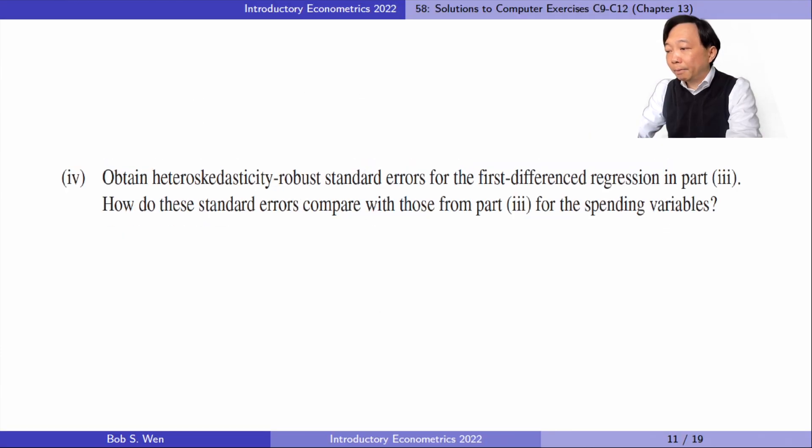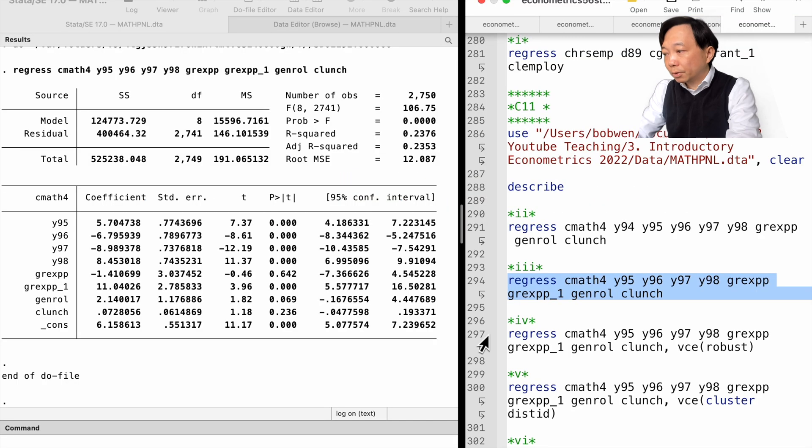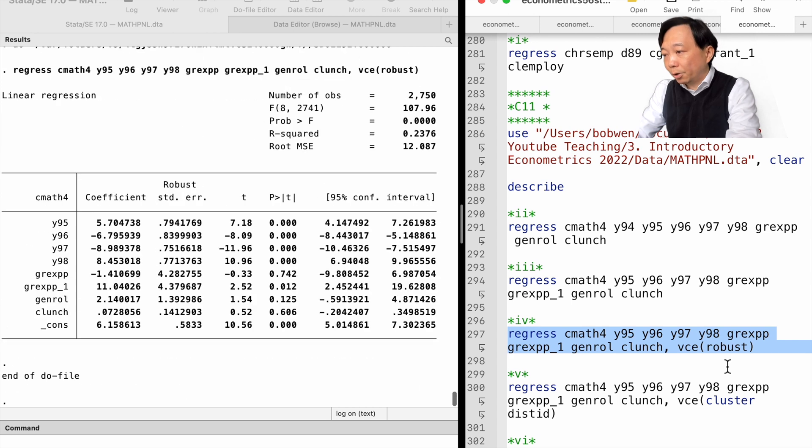In part 4, we obtain heteroscedasticity robust standard errors for the first differenced regression in part 3. How do these standard errors compare with those from part 3 for the spending variables? We use the variance-covariance matrix option to specify the heteroscedasticity robust standard errors. The standard error for the lagged spending variable becomes larger, 4.38, and the t-statistic becomes smaller, 2.52. The lagged spending effect is statistically significant at the 5% level.